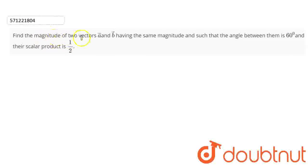Now here we have to find the magnitude of two vectors, that is A vector and B vector having the same magnitude, such that the angle between them is 60 degrees and their scalar product is half. So scalar product is dot product, so that means the dot product is given as half.